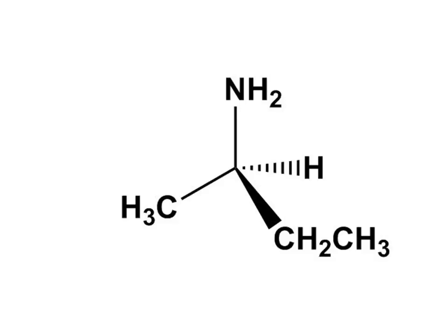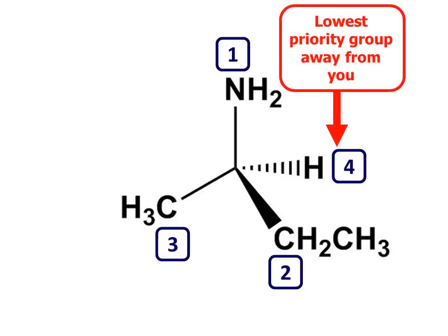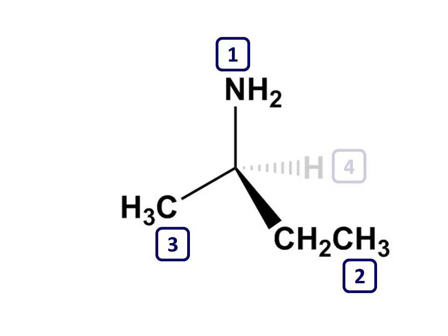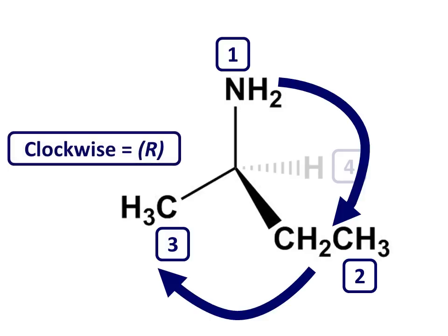Let's look at another example. Step one: rank the groups in priority order, from one highest to four lowest. Step two: position the molecule so the lowest priority group is away from you — again, in this situation it's already there, though that won't always be the case. Step three: read the three groups pointing towards you, from highest priority, the amino group, to second highest, ethyl, to third highest, the methyl group. In this case, the sequence takes us in a clockwise direction, which means that this is the R enantiomer.